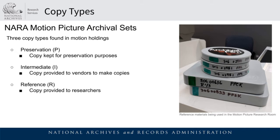To understand why every item in our holdings may not have an existing reference copy, we need to discuss copy types. The Moving Image and Sound Branch maintains moving image records in what we refer to as an archival set. In the perfect archival world, we would have three copies of every film: a preservation copy (P copy), an intermediate copy (I copy), and a reference copy (R copy). P copies are for preservation — the most original copies — and we try to limit their use. If we only have one copy of an item, it automatically becomes a P copy.